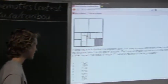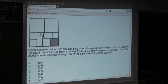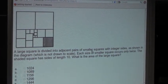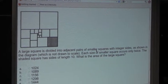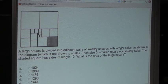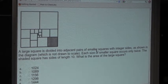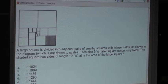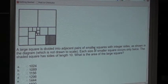So the question is, a large square is divided into adjacent pairs of smaller squares with integer sides, as shown in the diagram, which is not drawn to scale. Each size of smaller square occurs only twice. The shaded square has sides of length 10. What is the area of the large square?